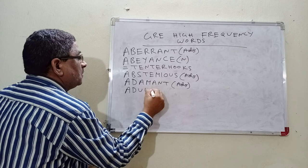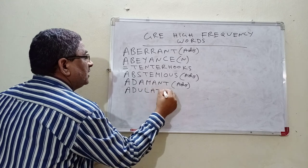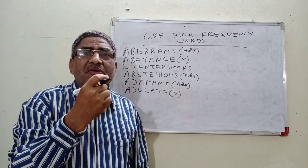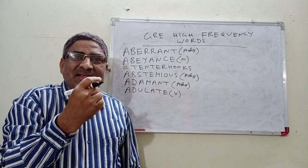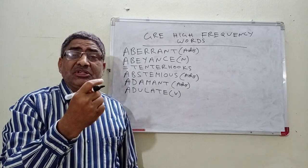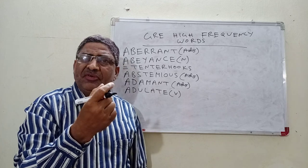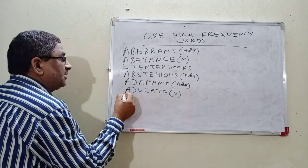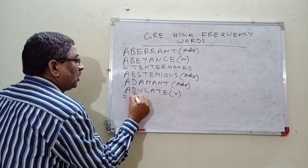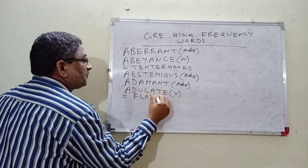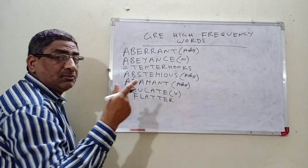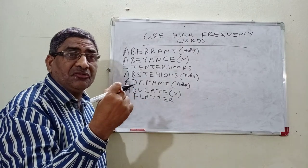Adulate. What is the meaning of Adulate? To praise excessively — that is called adulate. Adulation is a wonderful word. It is a negative word. Synonyms include: flatter — please do not try to flatter him; fawn — do not try to fawn him.